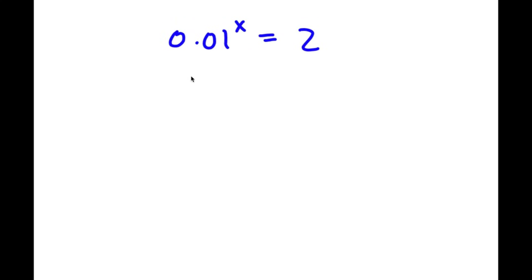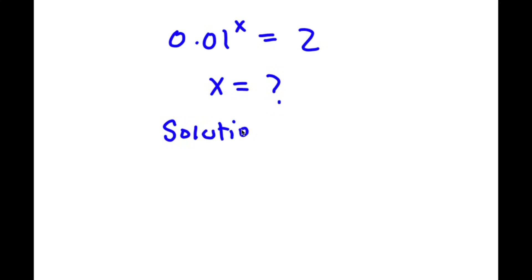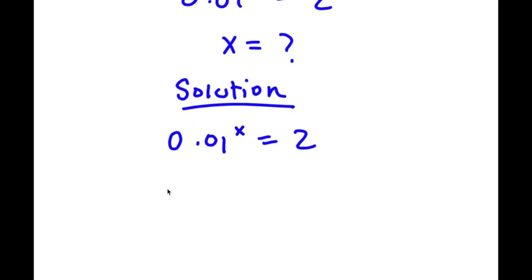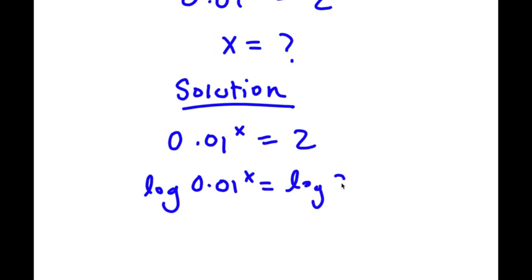In this problem, I have 0.01 to the power of x is equal to 2. I want to find the value of x. For my solution, I start with 0.01 to the power of x is equal to 2. Now I'm going to take the log on both sides. So now I have log 0.01 to the power of x is equal to log 2.